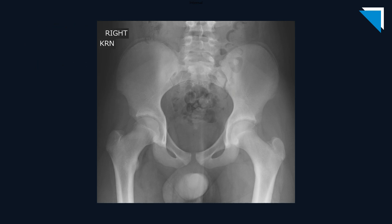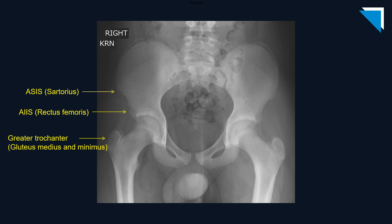It's never a bad time to review the common pediatric pelvic avulsion fracture sites. As we just saw, the anterior superior iliac spine, which is the sartorius origin; the anterior inferior iliac spine, which is the rectus femoris origin; the greater femoral trochanter, where the gluteus medius and minimus tendons insert; the lesser femoral trochanter, where the iliopsoas tendon inserts; and finally the ischial tuberosity, where the hamstring tendons originate.